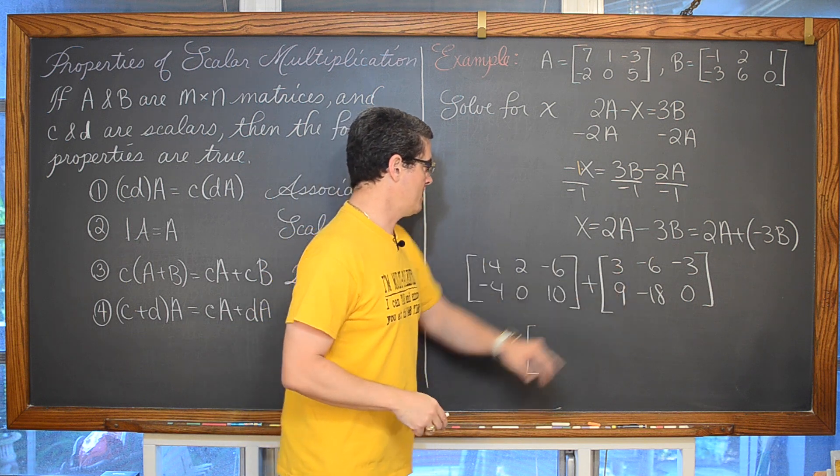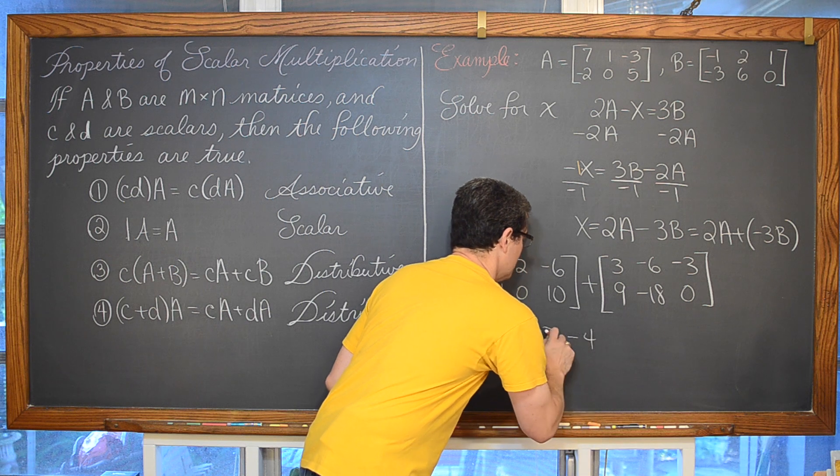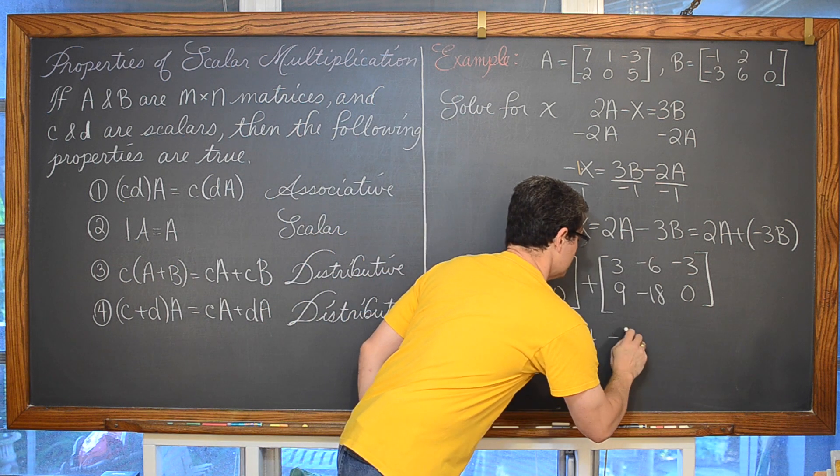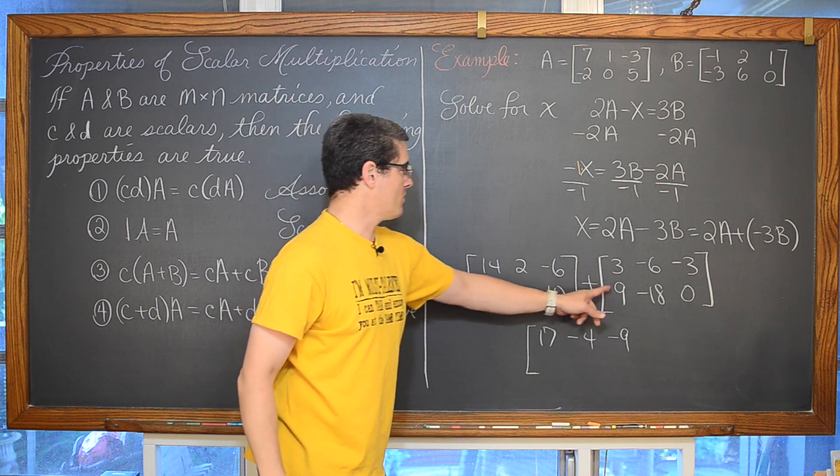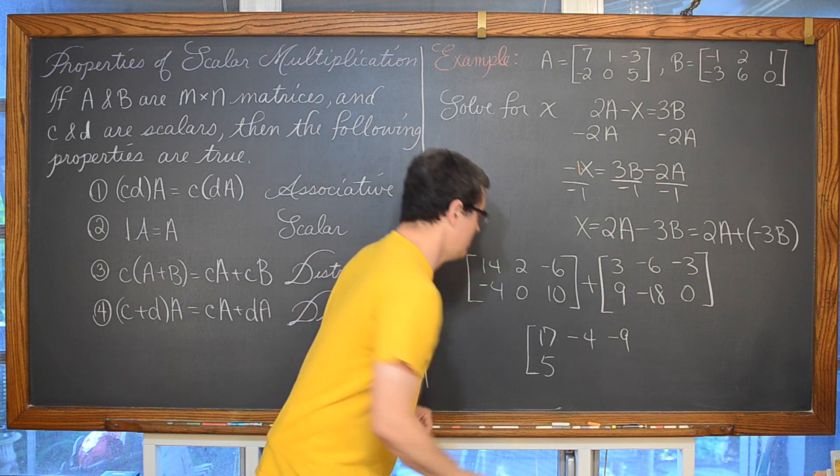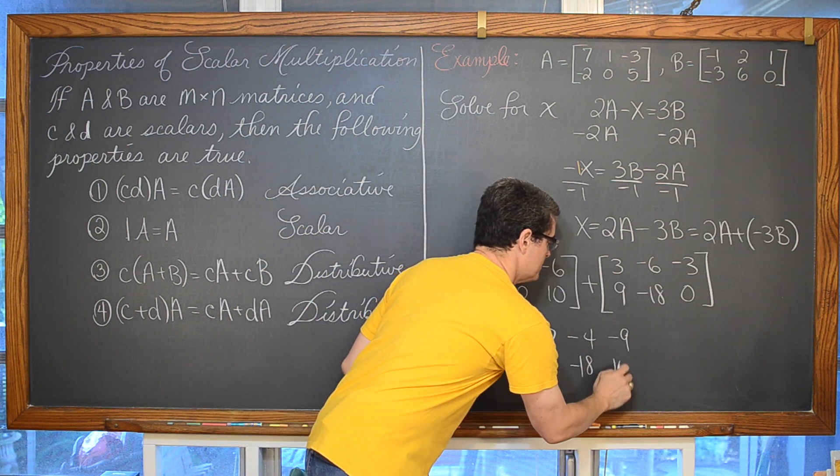14 plus 3 is equal to 17. 2 plus negative 6 is negative 4. And negative 6 plus negative 3 is negative 9. We have negative 4 and 9 is equal to 5. 0 and negative 18 is negative 18. And then we have 10 plus 0 is equal to 10.